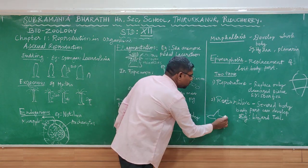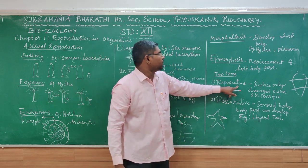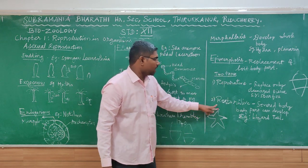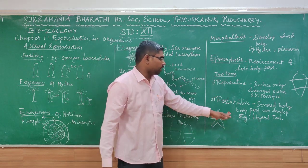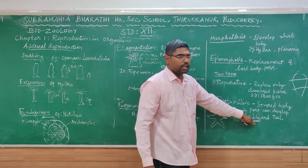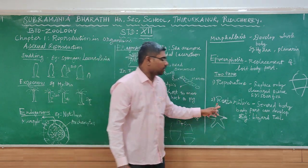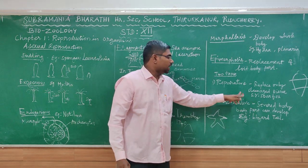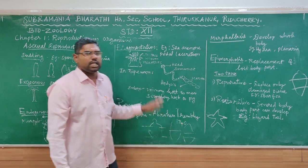There are two subtypes: reparative regeneration and restorative regeneration. In reparative regeneration, as seen in starfish, a damaged arm regrows from the damaged tissue. In restorative regeneration, as seen in lizards, a lost tail is regrown. These are the types of asexual reproduction covered.